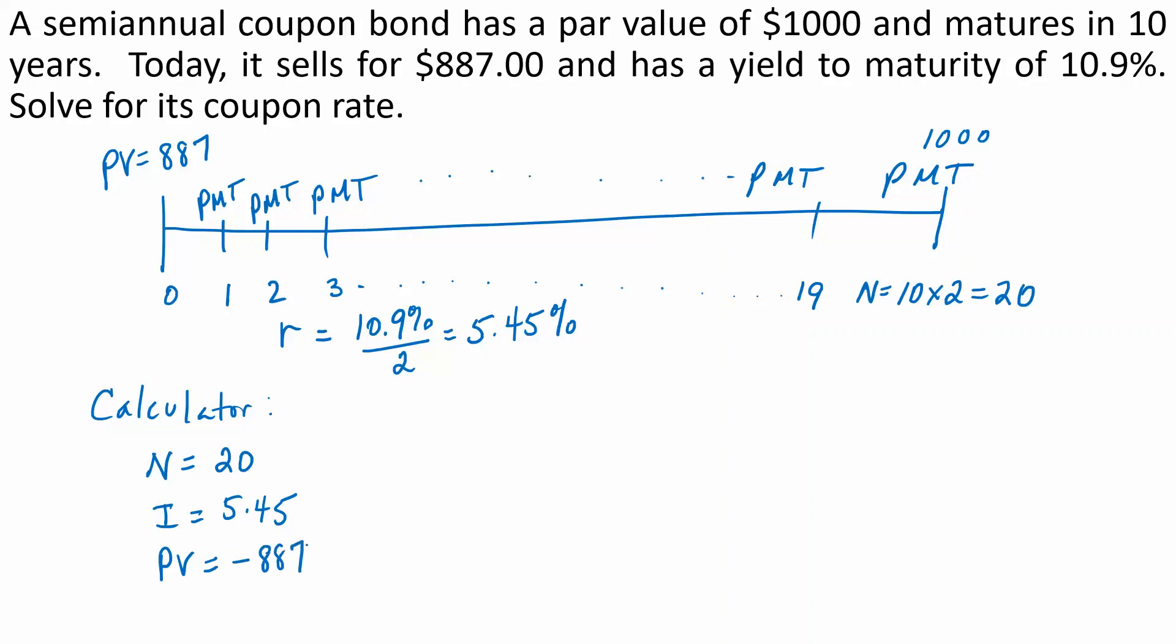You would put in negative $887 for the present value and $1,000 for the future value, then solve for the payment.